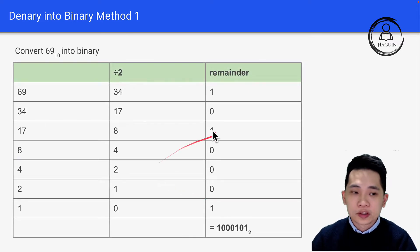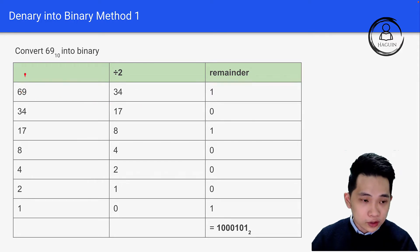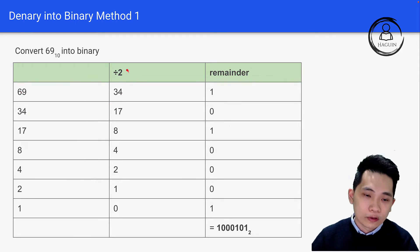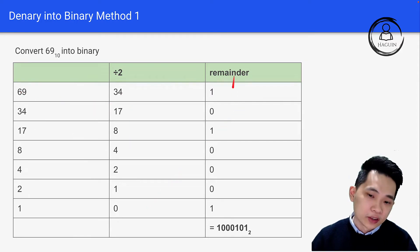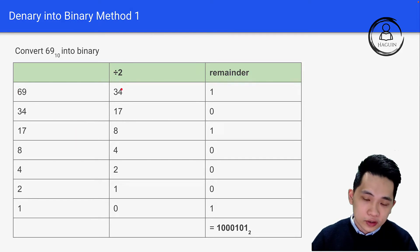Let's look at this table. We have 69 on the first column, then we have 'divided by 2' as a column, and 'remainder' as a column. First, you use 69 divided by 2 — you get 34 as a result with a remainder of 1.